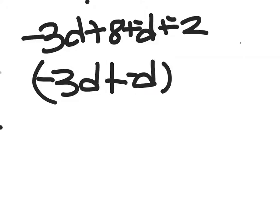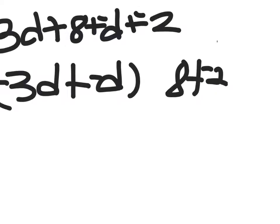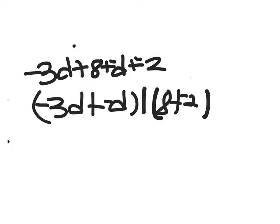Then you do 8 plus negative 2. This is where you're adding all like terms. So stuff without variables gets added with stuff without variables, and variables with the same letter get added with variables with the same letter.